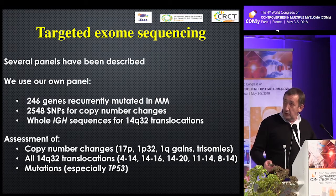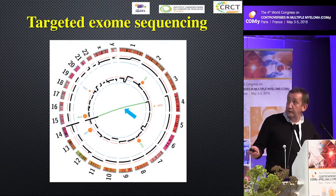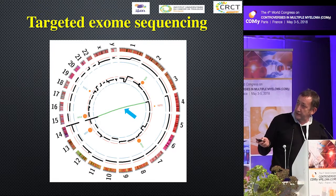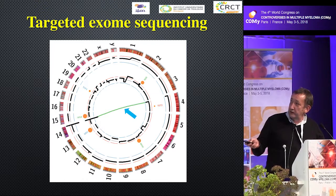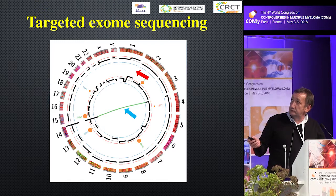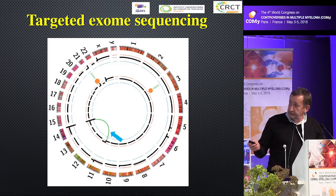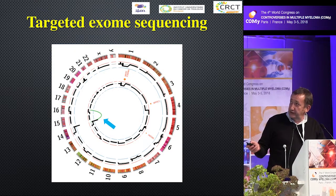We used that, and for example we have this kind of cartoon — you have all the chromosomes here — and in this patient you have a typical translocation between chromosome 4 and chromosome 14, with here a BRAF mutation. Another patient here with a translocation t(11;14) with a CCND1 mutation, another one with a t(14;16), and a subclonal mutation of MMSET, for example.